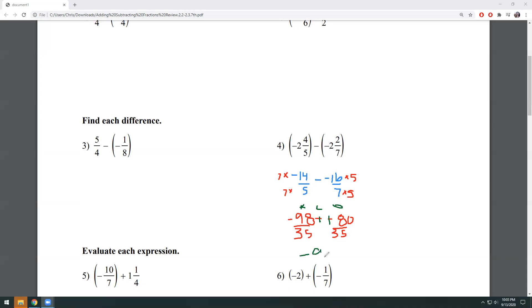So negative 98 plus 80 is going to give me negative 18. So that's going to be my numerator is negative 18. And then I just keep that denominator as 35. And that is my final answer there, it's negative 18 over 35.